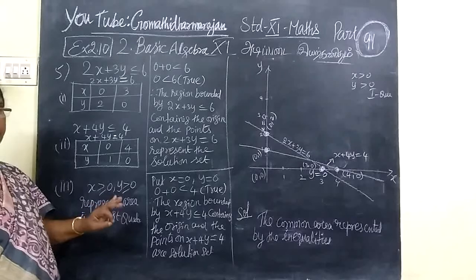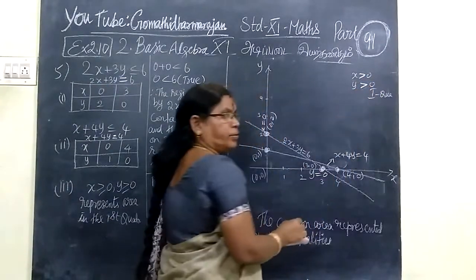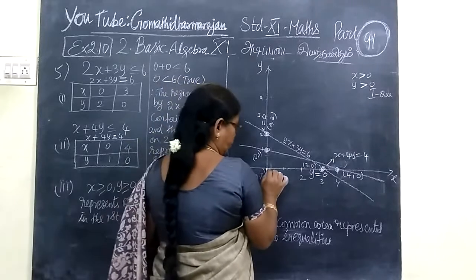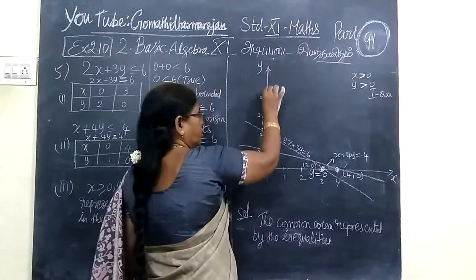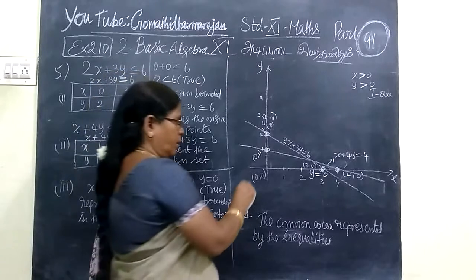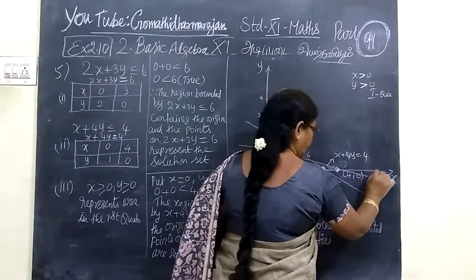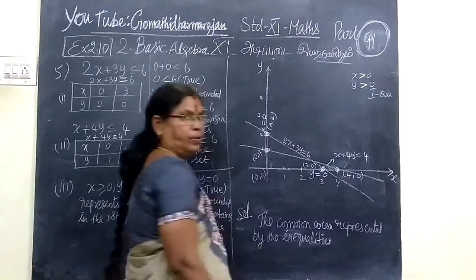Also the conditions are x greater than or equal to 0, y greater than or equal to 0. x equal to 0, this is nothing but y axis. x equal to 0 is the equation of y axis. And y equal to 0 is the equation of x axis.